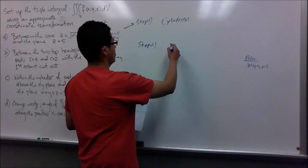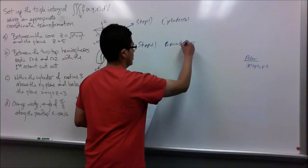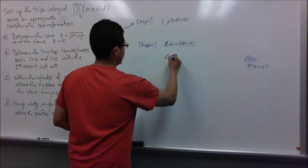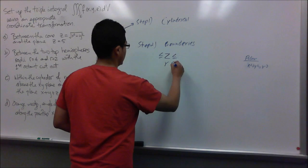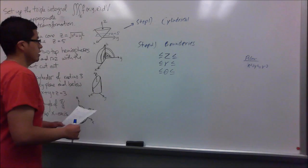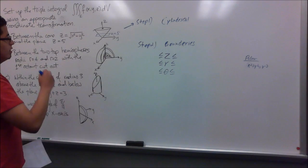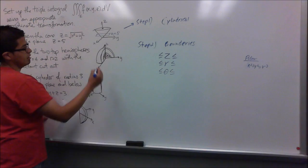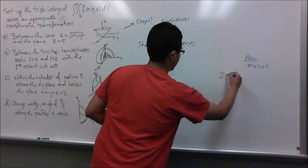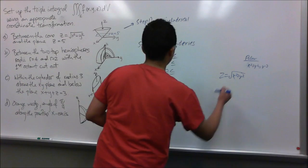In my second step I will be setting out the boundaries. The boundaries we use in cylindrical are z, r, and theta. For z, the lower surface would be the cone, which is z equals the square root of x squared plus y squared.